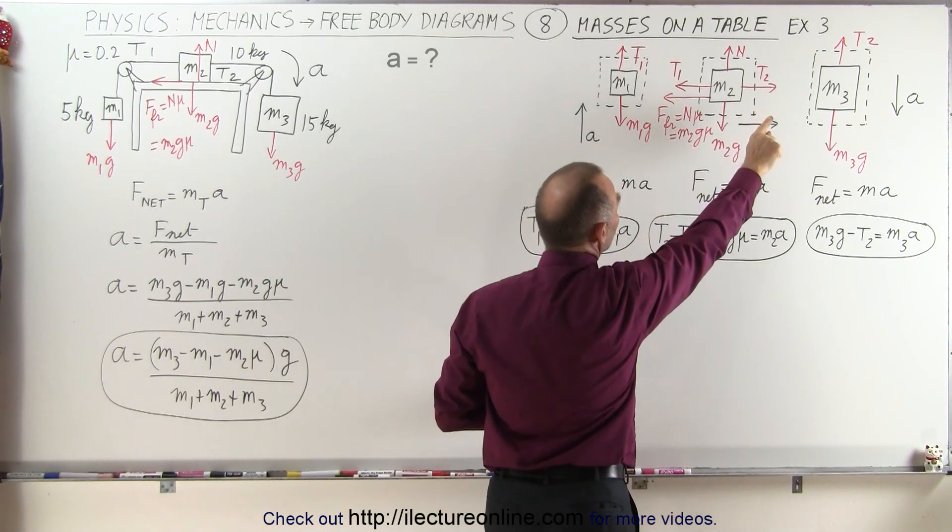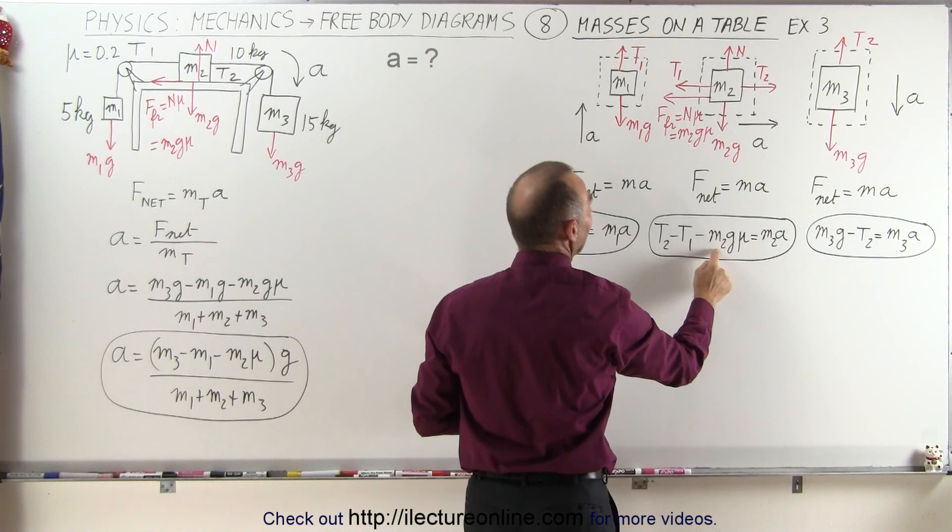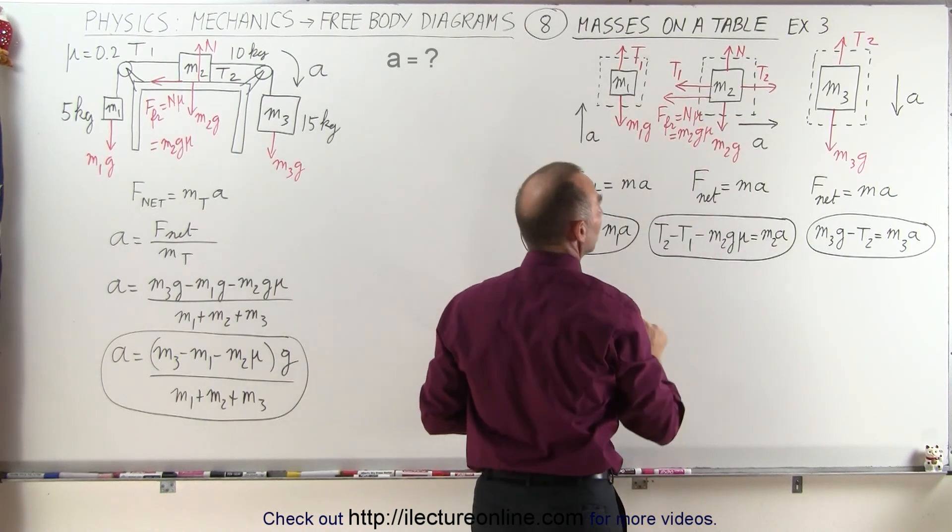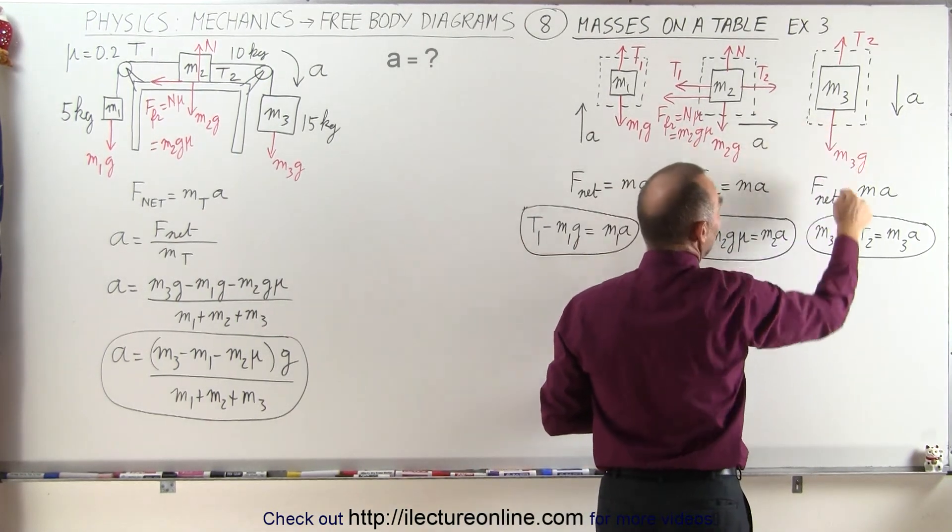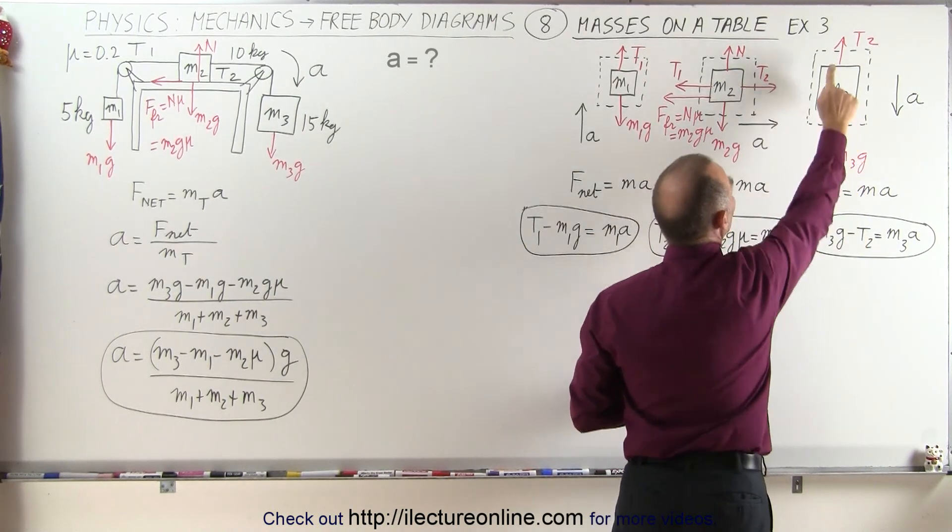For the second mass, we have the tension pulling to the right, T2 aiding the acceleration, T1 opposing the acceleration, and the friction force also opposing the acceleration. And for the third mass, we have the weight aiding the acceleration, and the tension opposing the acceleration.